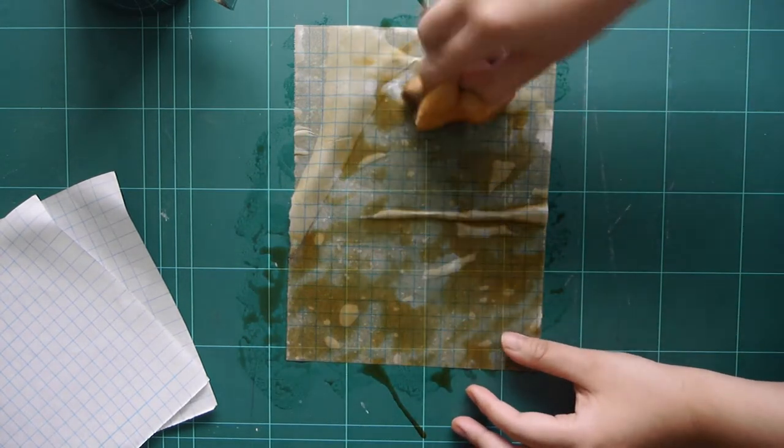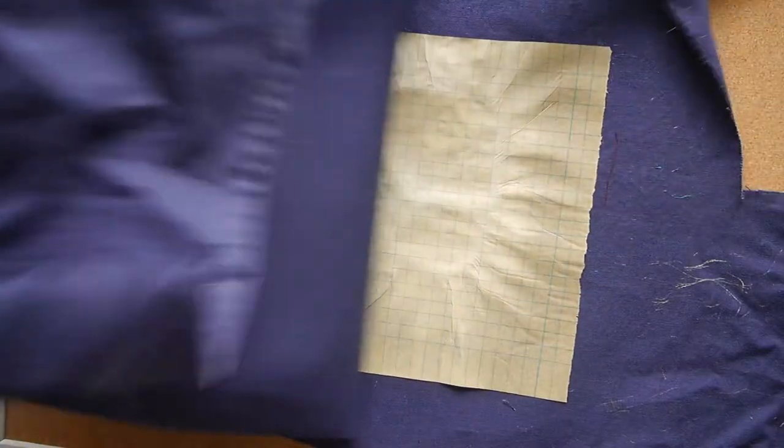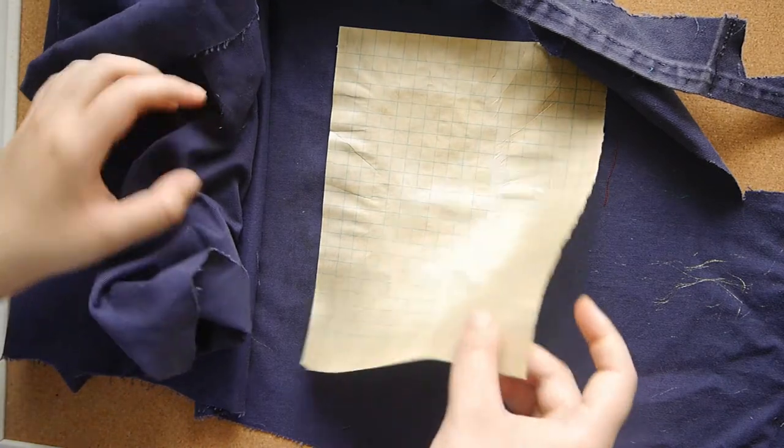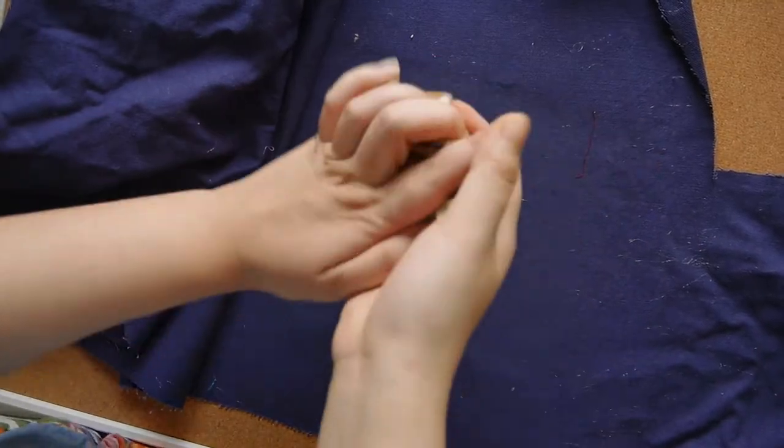I coated the paper with coffee stain just made out of instant coffee and then I ironed it and it came out with a pretty interesting texture. I also tried crumpling and ironing some of it as well just to give it a crinkly look.